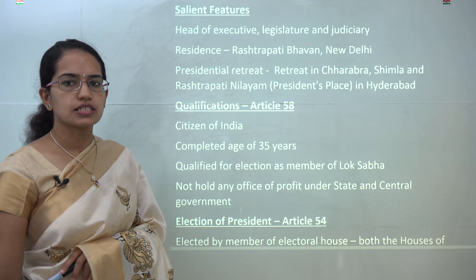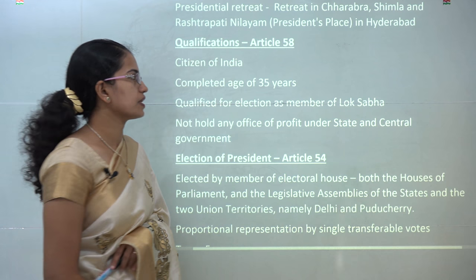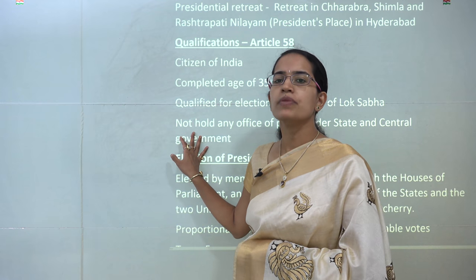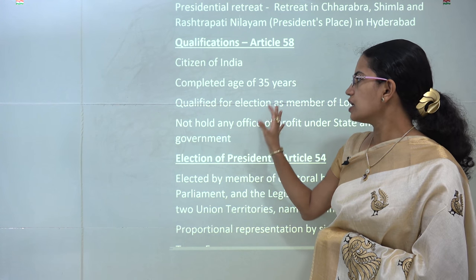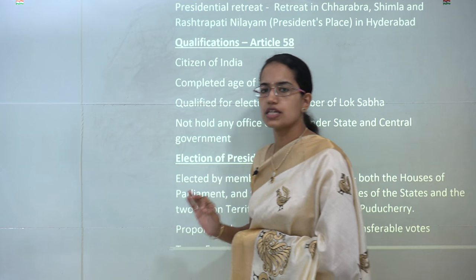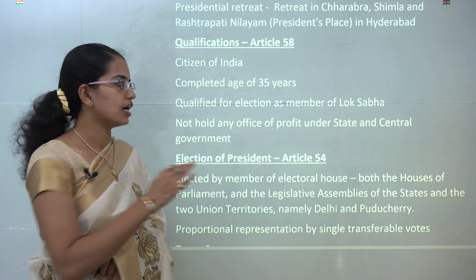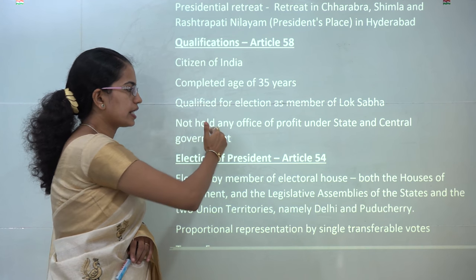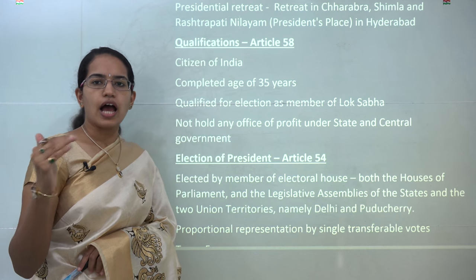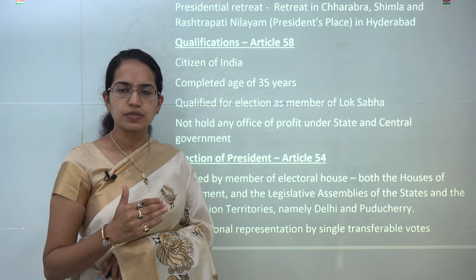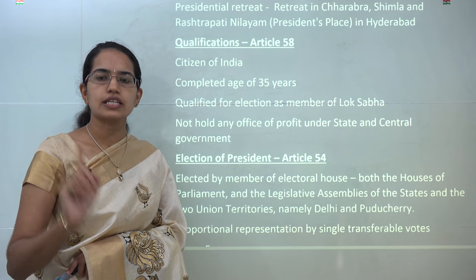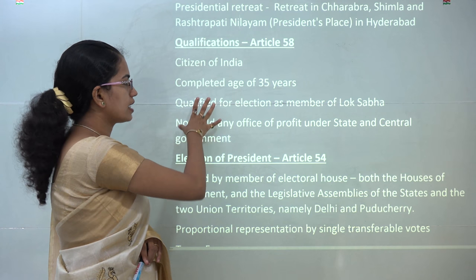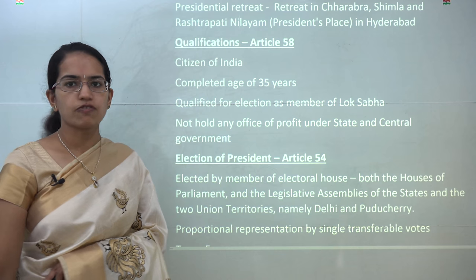What are the qualifications required for becoming the President of India? Under Article 58, it is mentioned that the president must be a citizen of India, minimum 35 years of age, and should not hold any office of profit. However, there is an exception — he can hold an office as the governor or as the vice president. He should also be qualified for elections as a member of Lok Sabha.